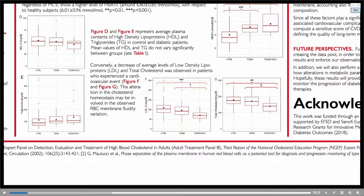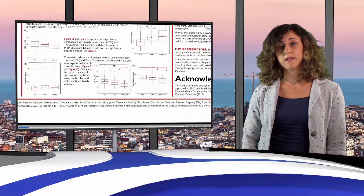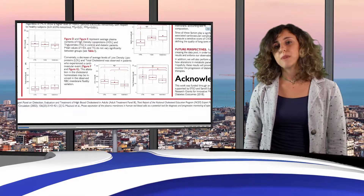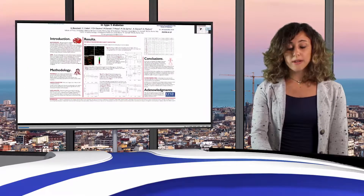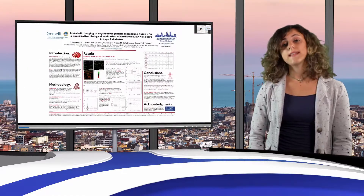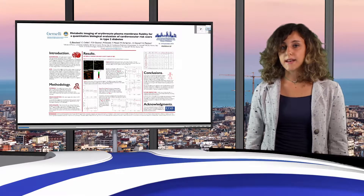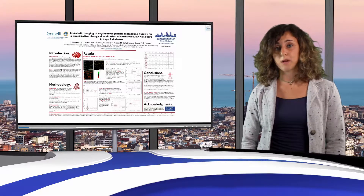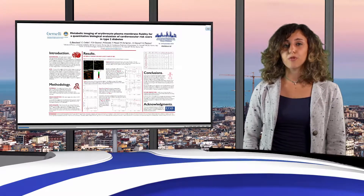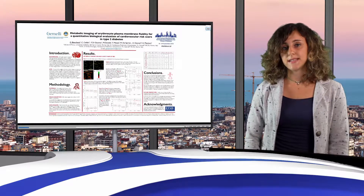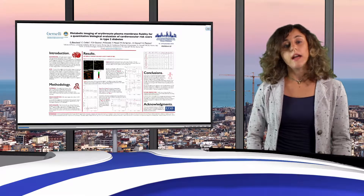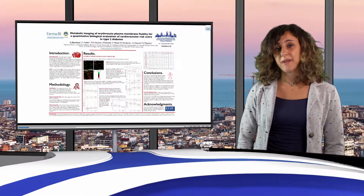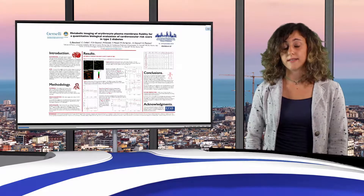Our hypothesis is that this impairment in cholesterol homeostasis may be responsible for the observed red blood cells' membrane fluidity variations. From these preliminary data, we can conclude that, although glycated hemoglobin constitutes a good indicator for distinguishing between healthy and diabetic subjects, the GP index can provide more information about the physical state of red blood cells' membrane. The combined evaluation of these parameters can therefore be used to estimate cardiovascular risk.